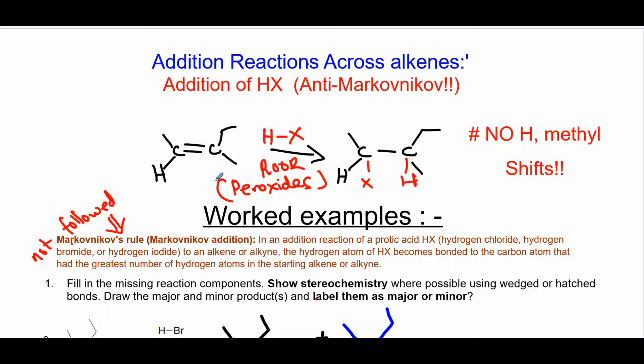So generally, this H ends up where the carbon is more substituted whenever you have HX added in the presence of a peroxide. The R group could be any carbon-containing alkyl chain or aromatic ring. So H goes there, X goes there.